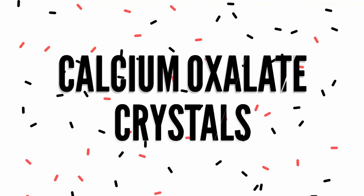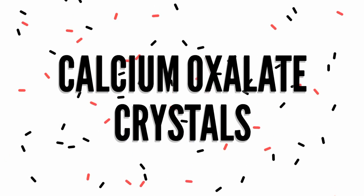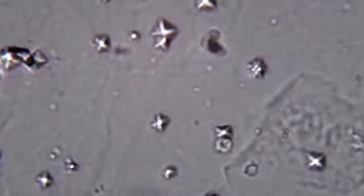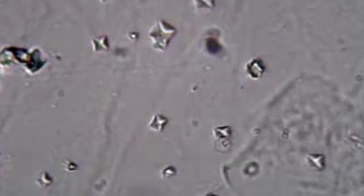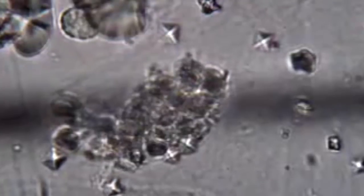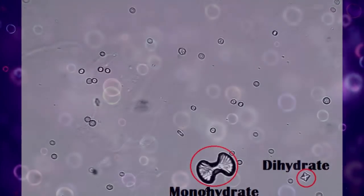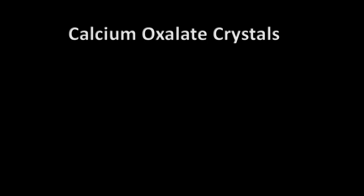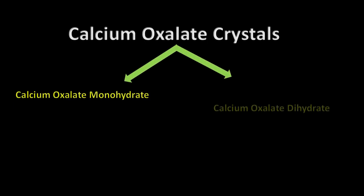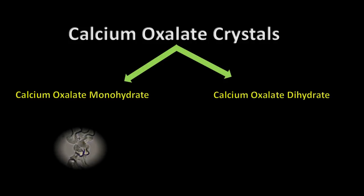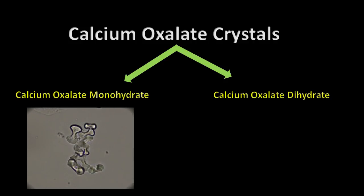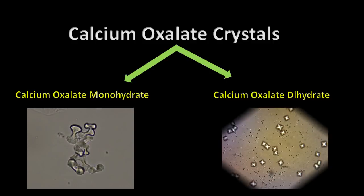Calcium oxalate crystals are colorless when viewed microscopically and are the most common type of crystals. There are two forms: the monohydrate and dihydrate form. The monohydrate calcium oxalate crystal is described as dumbbell-shaped and is common in ethylene glycol toxicity. The dihydrate form is octahedral or envelope-shaped.